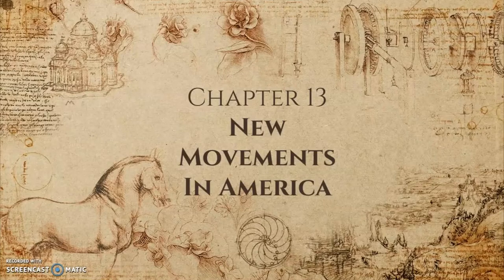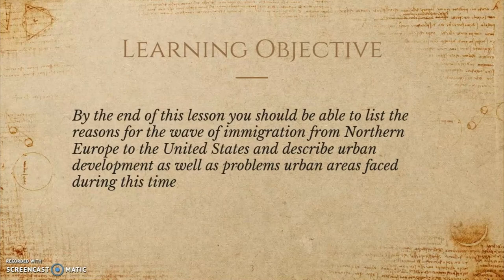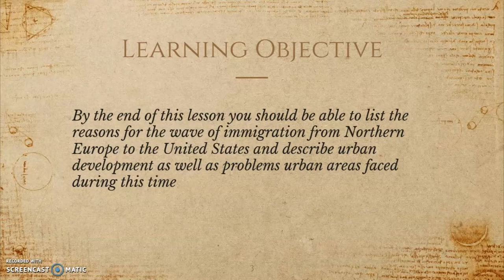Chapter 13 is going to focus on new movements in America, and in this particular section we are going to be going over immigrants and the urban challenges that are taking place during this time period in the 1850s. Your learning objective for today is to be able to list the reasons for the wave of immigration from northern Europe to the United States and to describe urban development as well as problems urban areas faced during the mid-1800s.